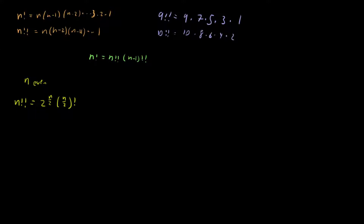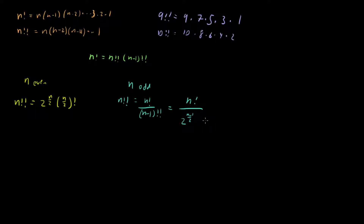If this is true, we can use this property to handle the odd case. For n odd, n double factorial is equal to n factorial over n minus 1 double factorial, where n minus 1 is even. Using the even property, this becomes n factorial divided by 2 to the n minus 1 over 2 times n minus 1 over 2 factorial. This is also sometimes written as n plus 1 factorial over 2 to the n plus 1 over 2 times n plus 1 over 2 factorial.